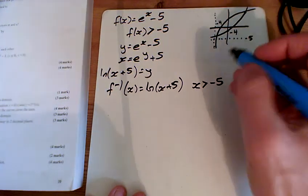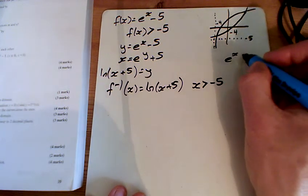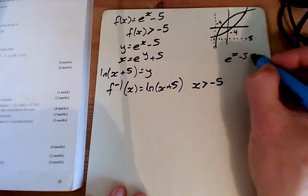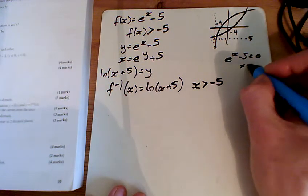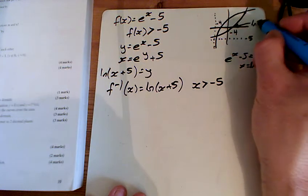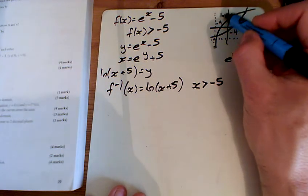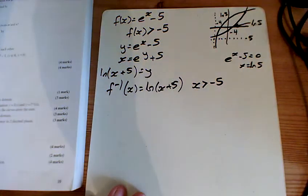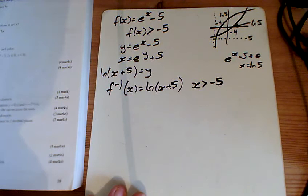That point there. So when does e to the x minus 5 equals 0? Well, that's at LN 5, isn't it? So that value there is LN 5, which means that value there is LN 5 as well. Getting a bit of a mess in the corner there. But that's what we've got.